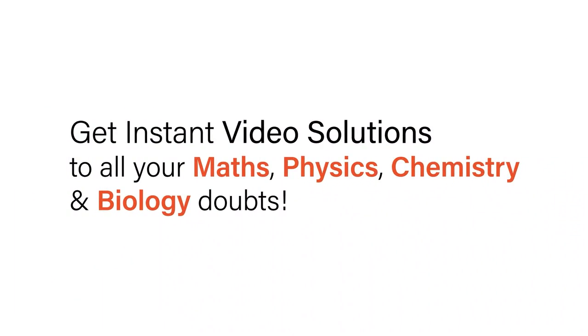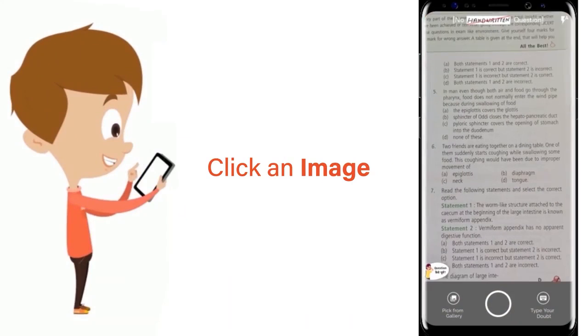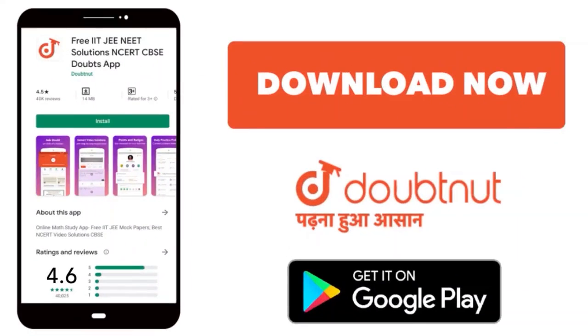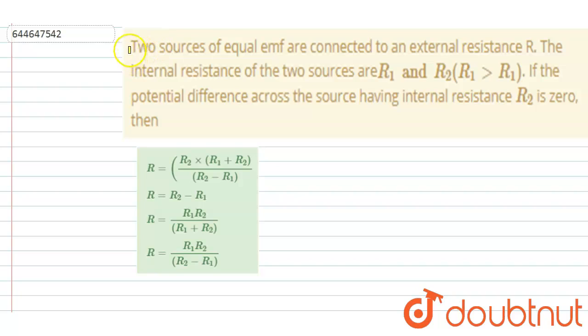With Doubtnet, get instant video solutions to all your maths, physics, chemistry, and biology doubts. Just click the image of the question, crop the question, and get instant video solution. Download Doubtnet app today. Hello everyone, two sources of equal EMF are connected to external resistance R.